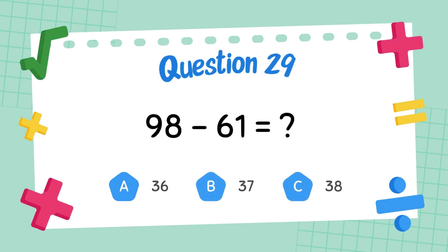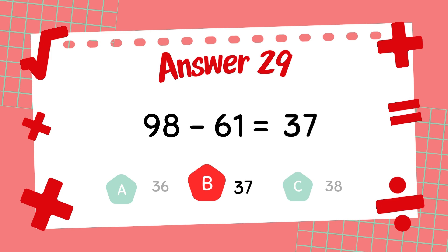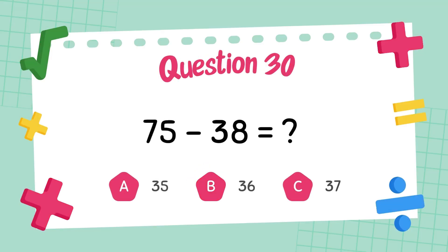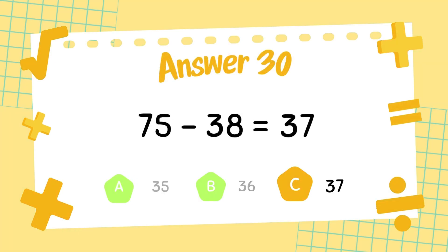What is ninety-eight minus sixty-one? The answer is thirty-seven. What is seventy-five minus thirty-eight? The answer is thirty-seven.